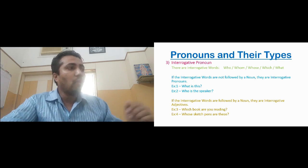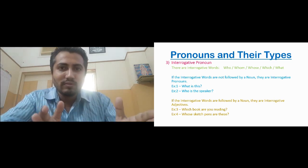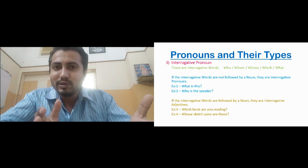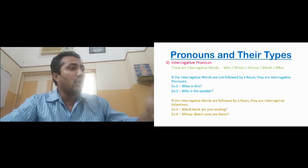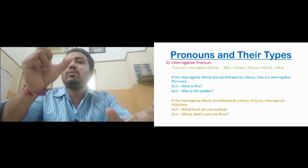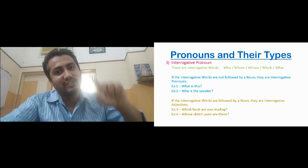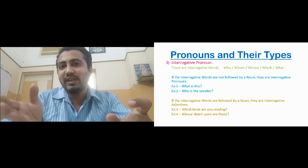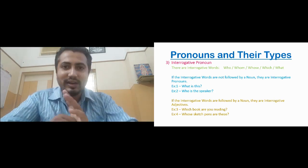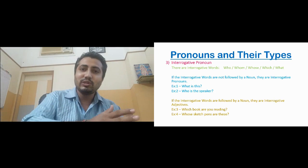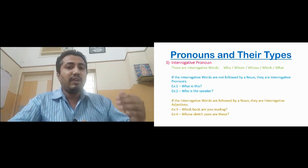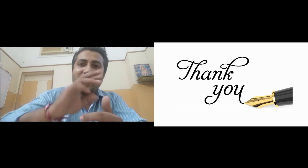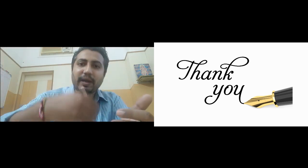Examples: 'What is this?' — after 'what' there is no noun, so it is an interrogative pronoun. 'Who is the speaker?' — after 'who' there is no noun, so it is an interrogative pronoun. 'Which book are you reading?' — right after 'which' there is the noun 'book,' so it becomes an interrogative adjective. 'Whose sketch pens are these?' — right after 'whose' is the noun 'sketch pens,' so it is an interrogative adjective. So along with pronouns, we have studied demonstrative adjectives and interrogative adjectives. The rest of the pronouns will be explained in Part 2.